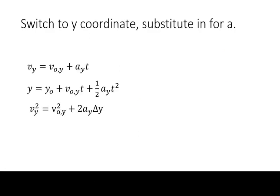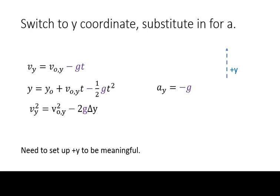Deriving the free fall equations is simple. You start with the one-dimensional kinematic equations for constant acceleration. You switch them to y-coordinates. Finally, you plug in for vertical acceleration.